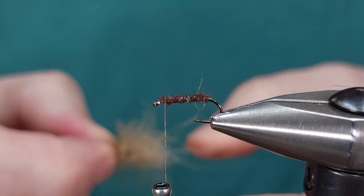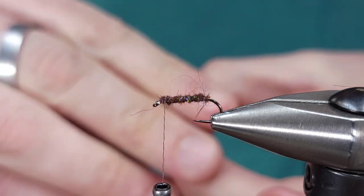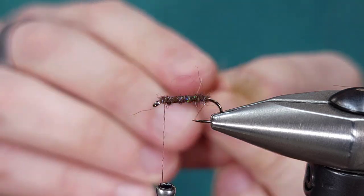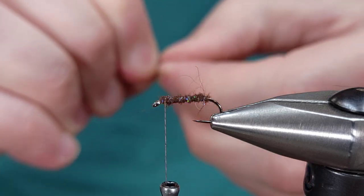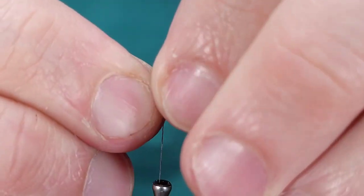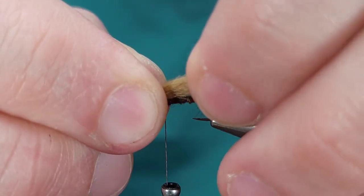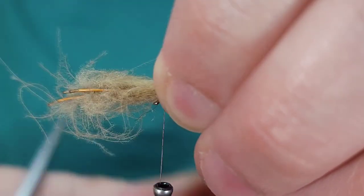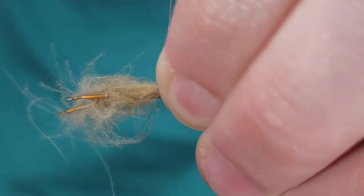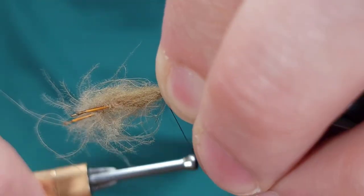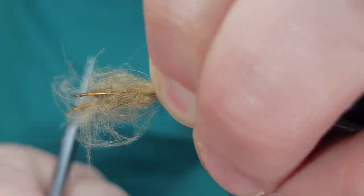For this size 14 I'm using three CDC feathers. As you can see I snipped out the tips just to make a more natural taper. On a size 16 or smaller you really only need to use two feathers, but on this 14 I'm using three to get a better bigger profile.